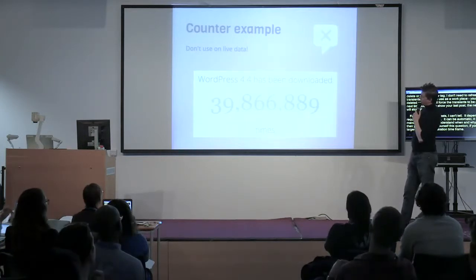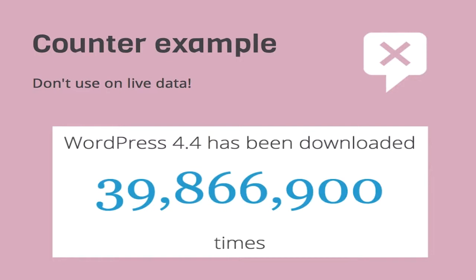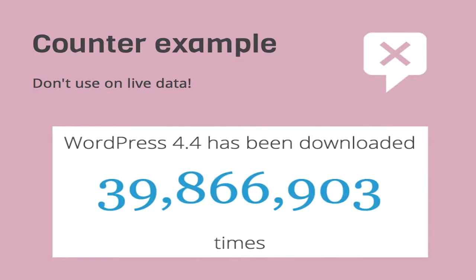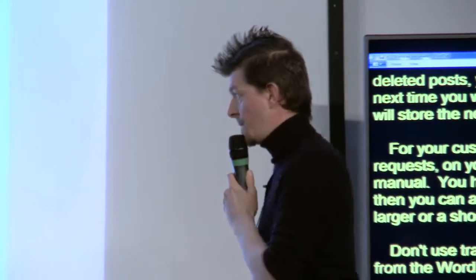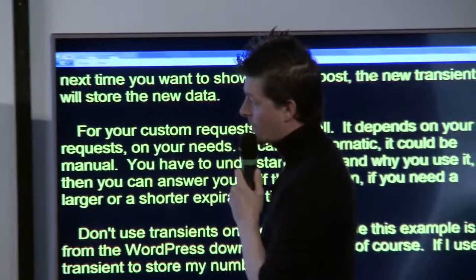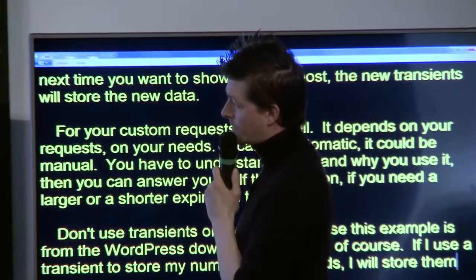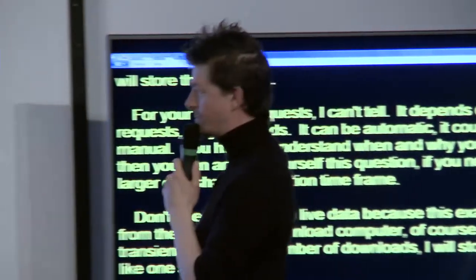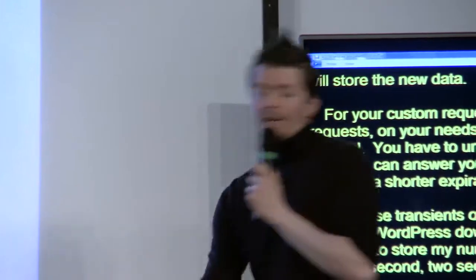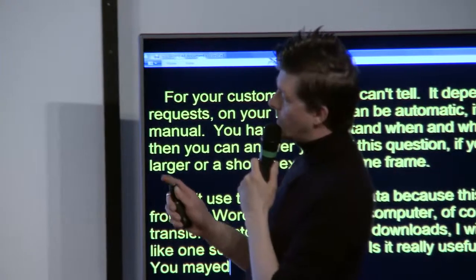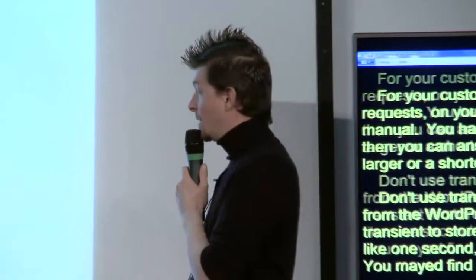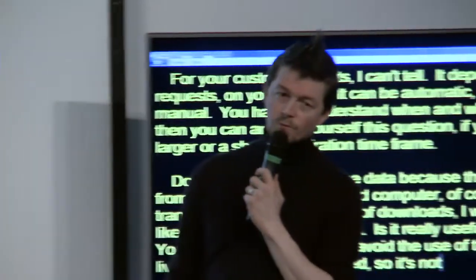Don't use transients on live data. This example is from the wordpress.org download counter. If I use a transient to store my number of downloads, storing them for one or two seconds - is it really useful? Not sure. Avoid using transients on live data because it's cache, so it's not very live. And the big question: how do you use transients?